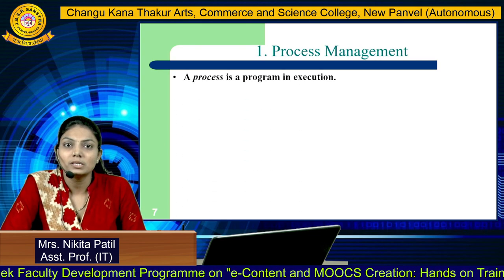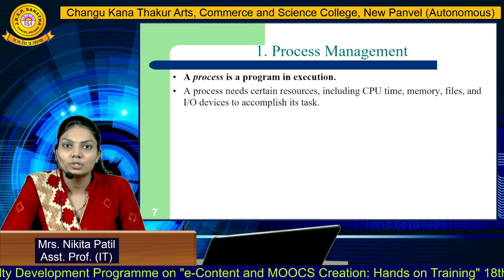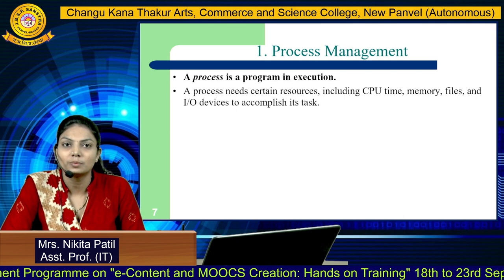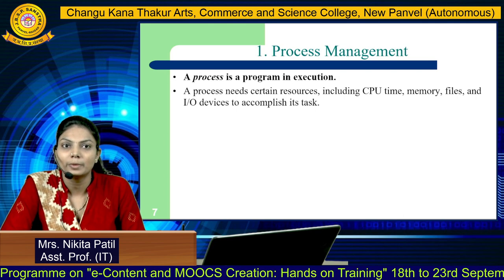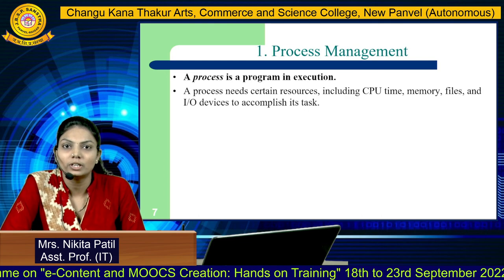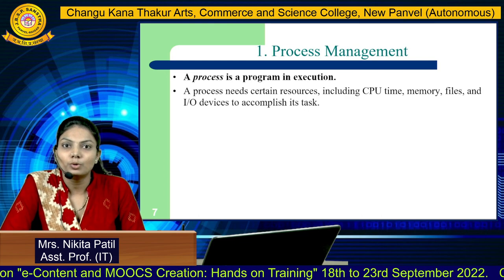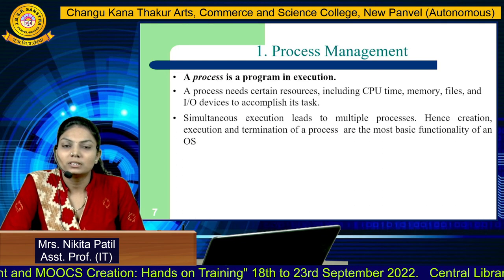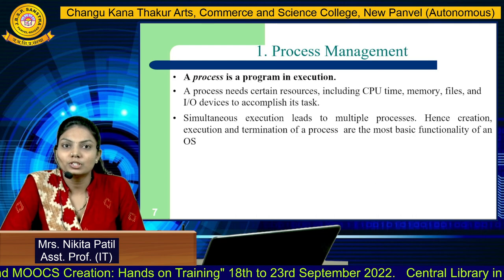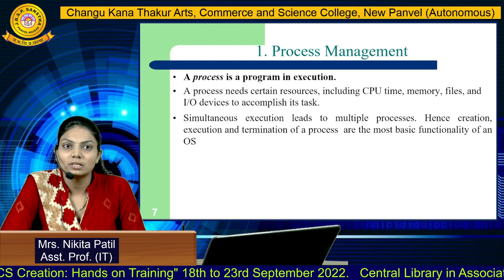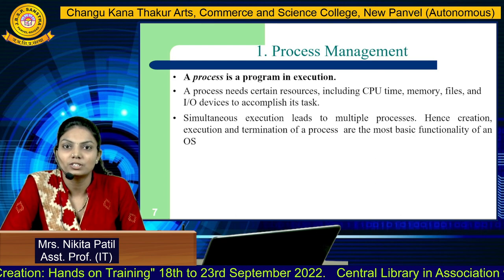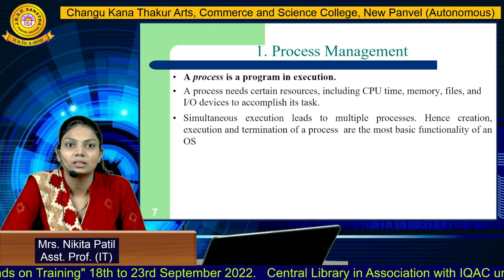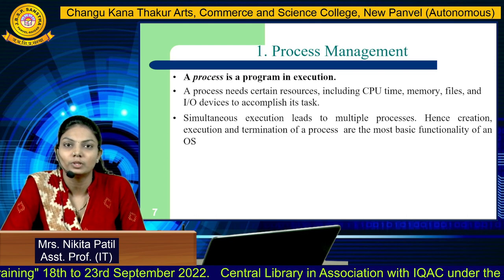First is process management. A process is a program in execution. A process needs certain resources, including CPU time, memory, files, and input/output devices, to accomplish each task. Simultaneous execution leads to multiple processes; hence, creation, execution, and termination of a process are the most basic functions of the operating system.